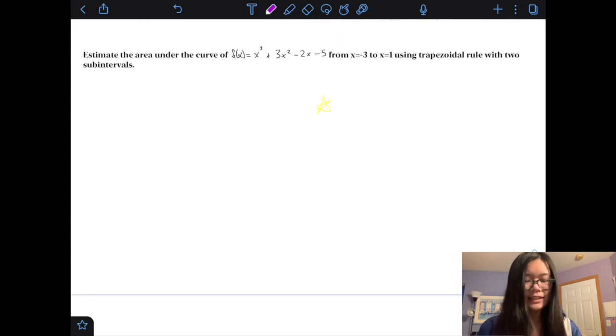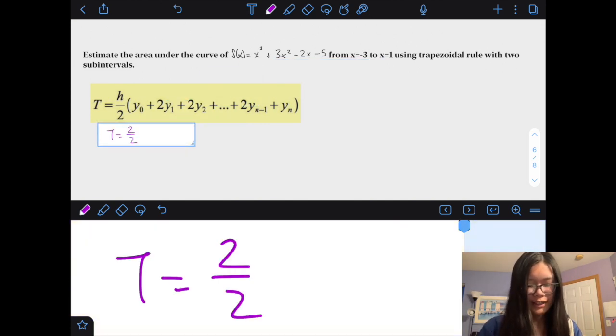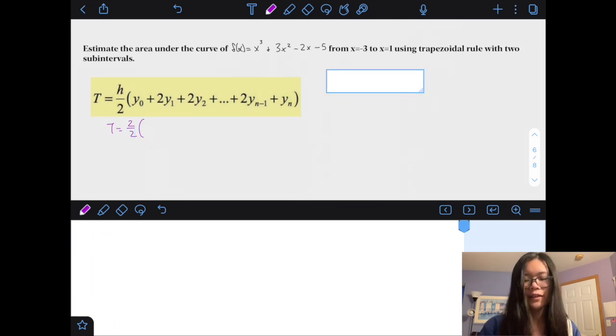So, our next problem is estimate the area under the curve of f of x equals x cubed plus 3x squared minus 2x minus 5 from negative 3 to 1 using Trapezoidal rule with two subintervals. Alright, so real quick, there's the Trapezoidal rule, and it's asking for two subintervals, and it's going from negative 3 to 1, so the distance, the change in x between our subintervals is going to be 2 this time. So, remember to check, your height is not always going to be 1, it will change sometimes.